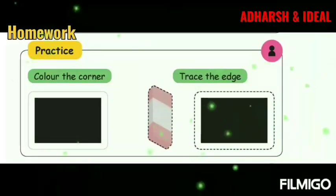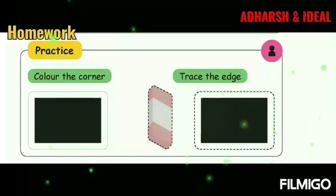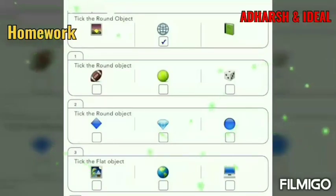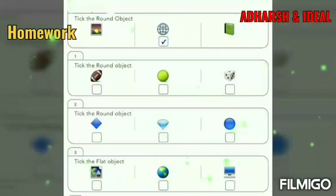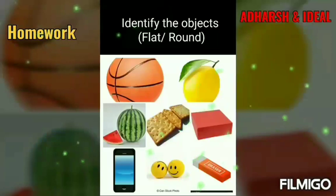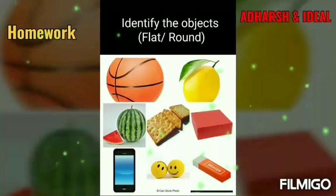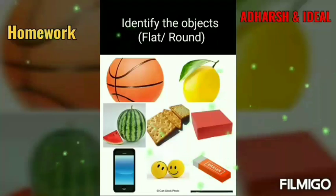Let's see the homework. First homework: color the corner. Second: trace the edge. Third homework: read the question, then see the options. If the question is round, tick the round object. If the question is flat, identify the flat object and tick it. Fourth: identify the objects as flat or round. Draw a box and divide it into two parts — one column for flat objects and another for round objects. Identify which objects are flat and which are round, then write them down correctly.